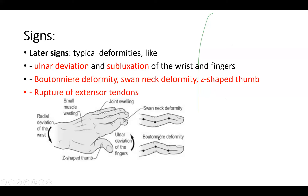At the beginning, those deformities are still flexible and you can correct them by bending. But at the end, you will not be able to correct them. You will also have ulnar deviation of the fingers, and you will have rupture of the extensor tendons, as the swelling infiltrates the tendon and nibbles away at it until it ruptures.